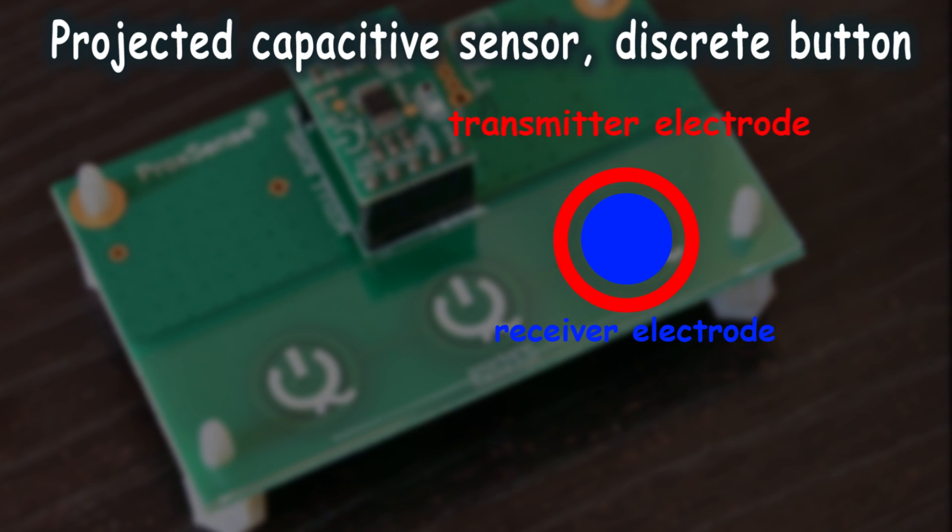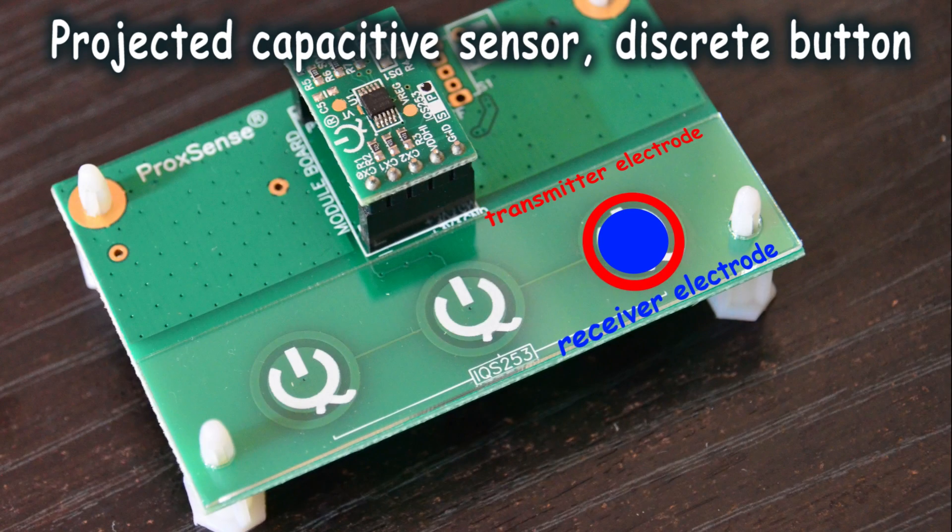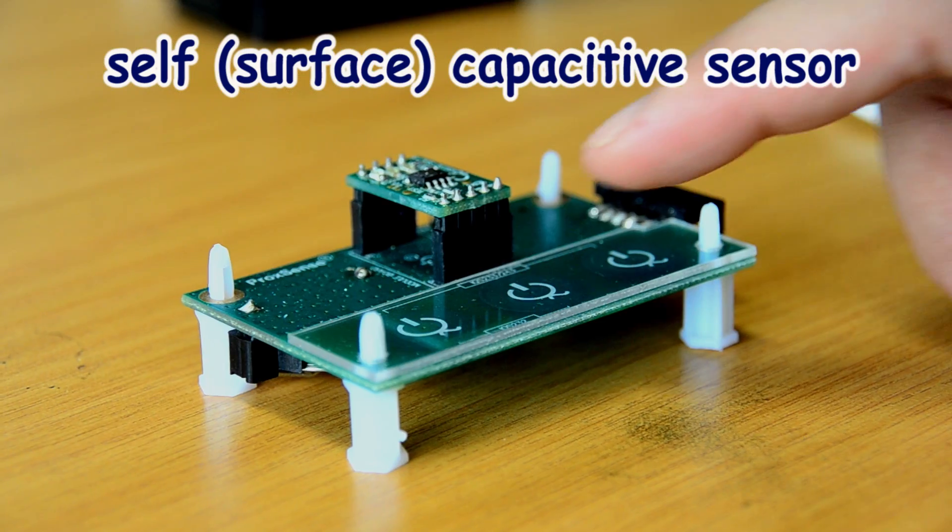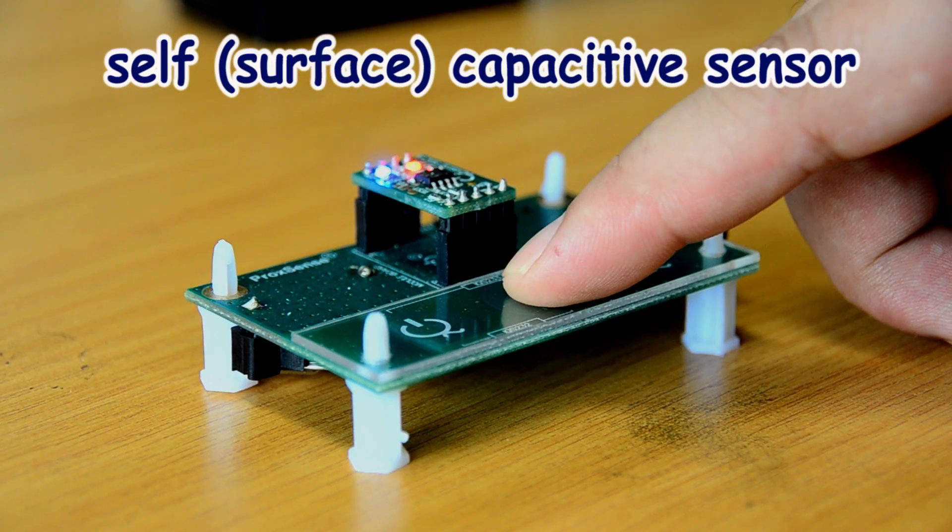The technology of projected capacitive sensors evolved from its predecessor, the self-capacitive sensors, also known as the surface capacitive sensors.